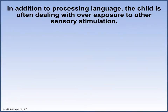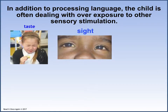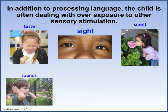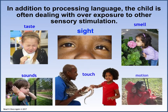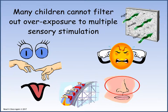We've discussed the importance of using repetition and visual cues to help children process language, but we also need to remember that there are other factors that interfere with learning and language development. More and more children are entering the classroom with a variety of sensory issues. These include taste, sight, smell, sound, touch, and motion. Because children are not always able to tell us what they're feeling, we are not aware of their issues. Most of us are born with sensory filters that keep our brains from being overstimulated.